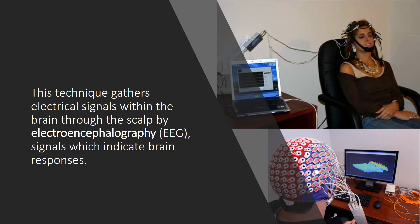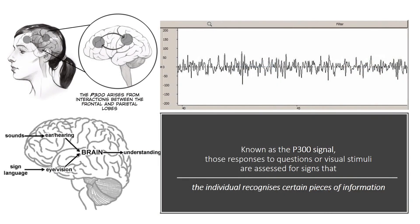This technique gathers electrical signals within the brain through the scalp by electroencephalography, signals which indicate brain responses. The P-300 response, known as the P-300 signal, those responses to questions or visual stimuli are assessed for signs that the individual recognizes certain pieces of information.